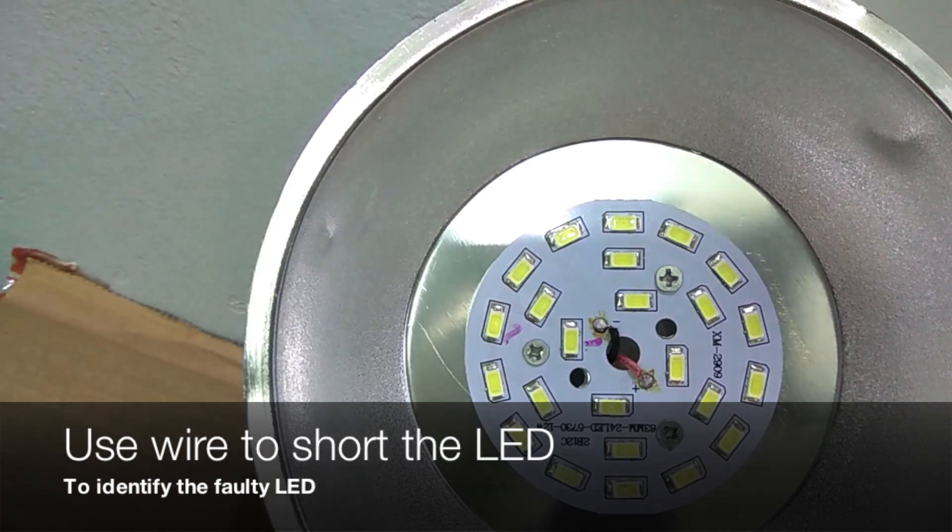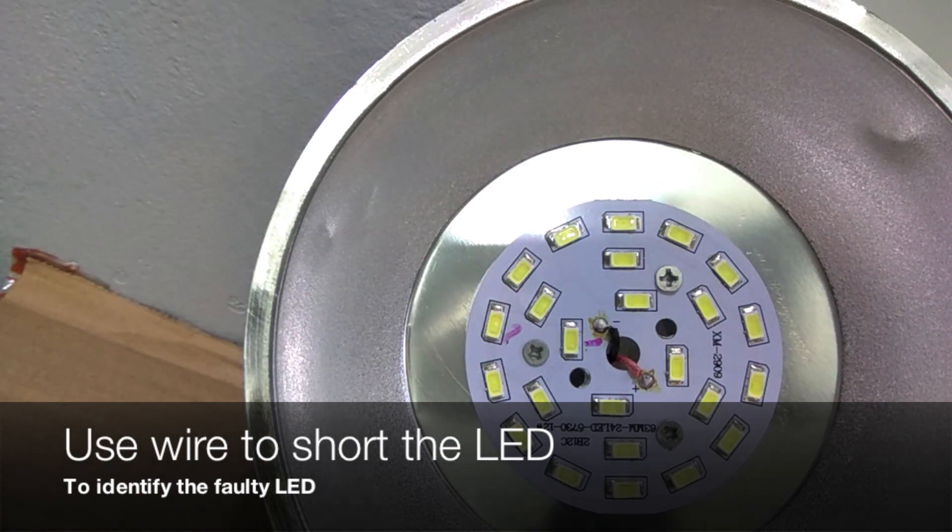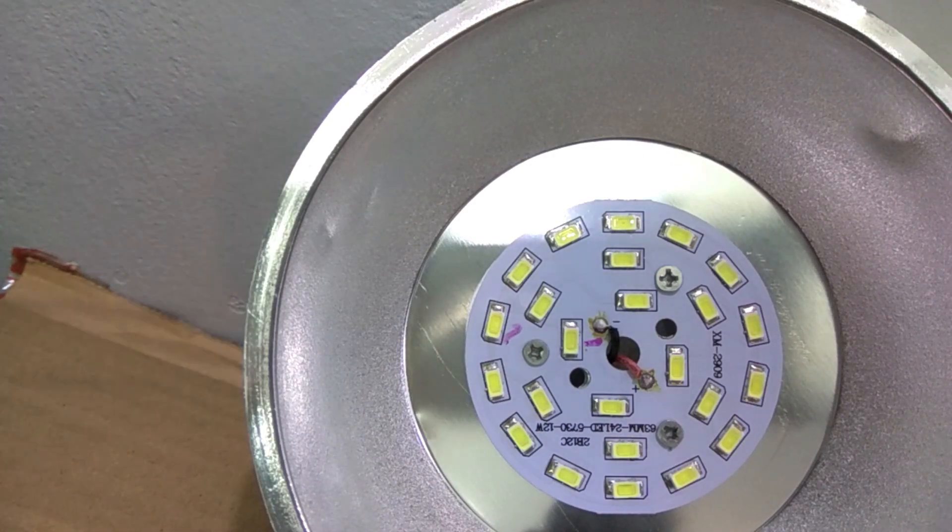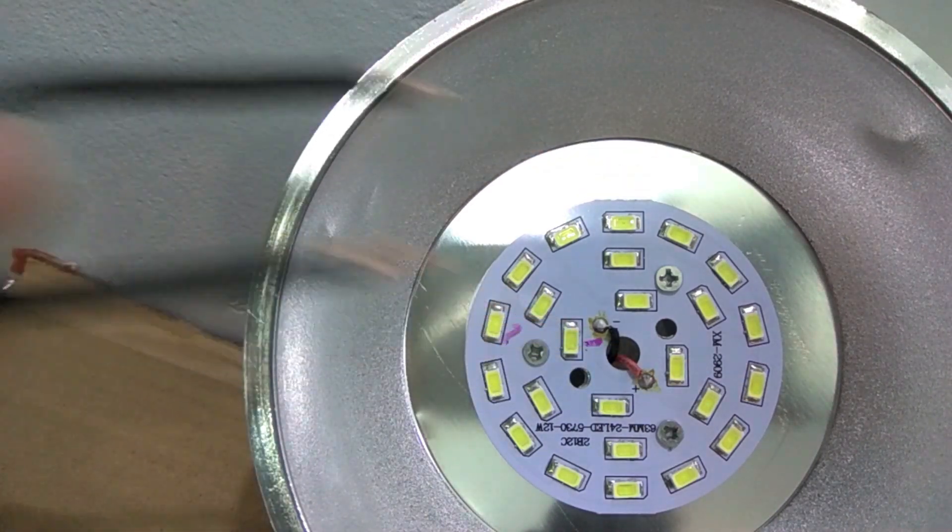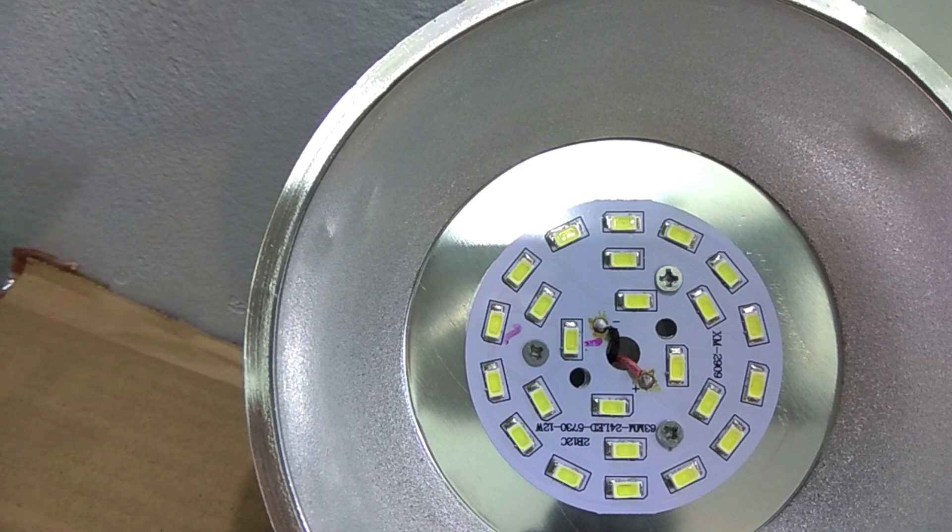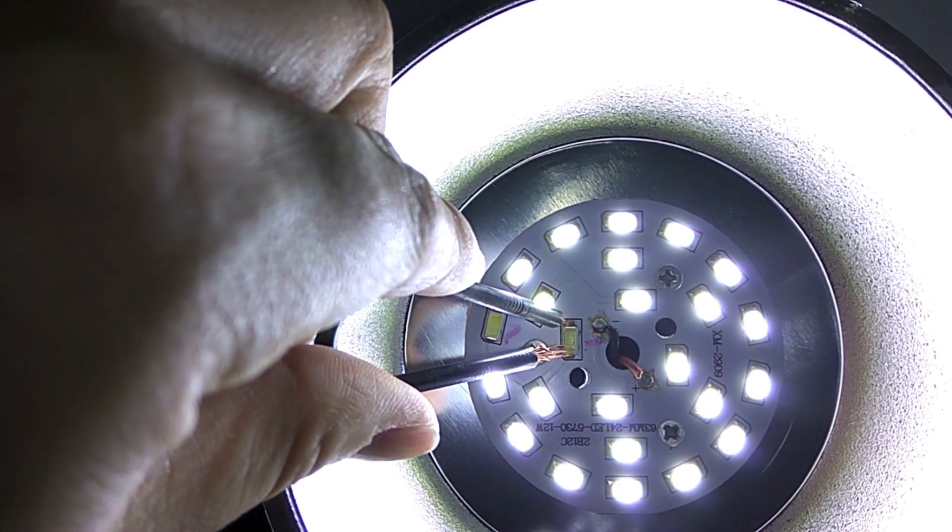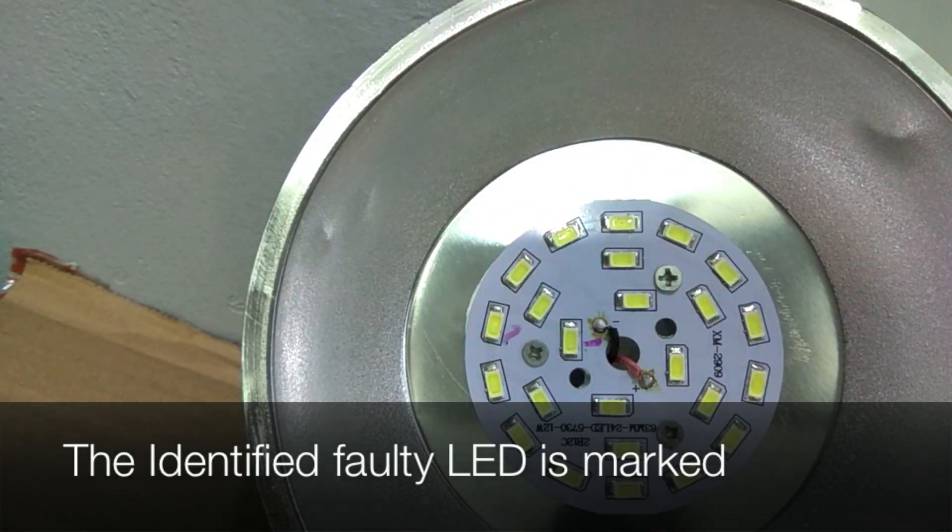Then I use a short wire to short the LED to check if the non-lit LED is the faulty LED that I need to rework. Once I short it, actually the rest of the LEDs light up.